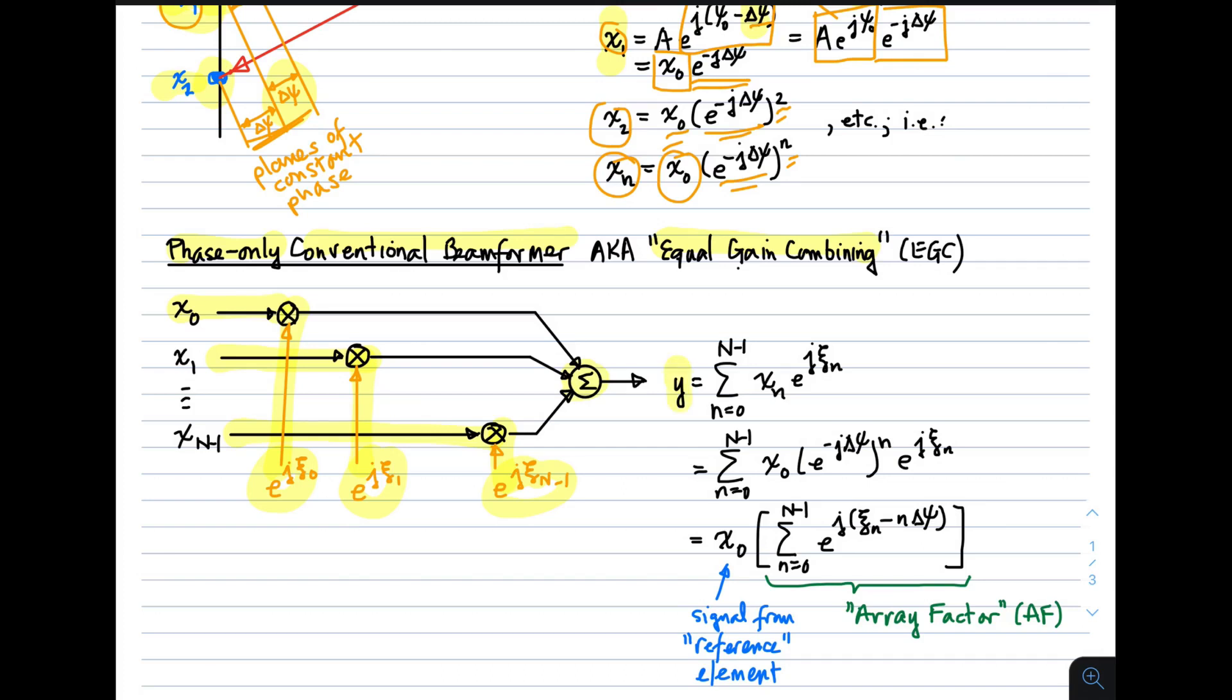So y is the output. And we see that the mathematical expression that we have described using this diagram is the sum from 0 to n minus 1, that is the sum of the elements, x sub n multiplied by e to the j psi n. So, the psi's are the propagation related phases, and the psi's are the phases that we apply in the process of doing beamforming. Now we can make the substitution for x sub n. And we'll do that right there, using the expression we just derived. And we see that x sub 0, that is the signal at the reference element, can be pulled out of this sum. And what remains does not depend on the signal. It just depends on the angle at which the wave arrives, that is represented by psi, and the phases that we use in the beamformer, that is the psi's.